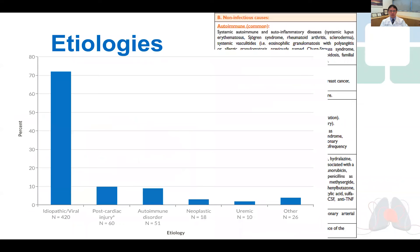At the Cleveland Clinic in 2019, we saw 600 new patients, 70% of which had idiopathic and viral etiology, followed by post-cardiac injury and autoimmune disorders.